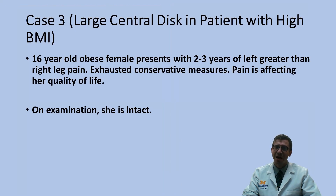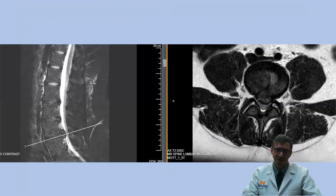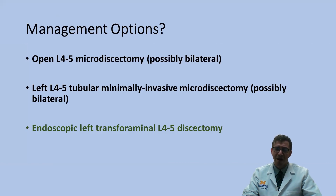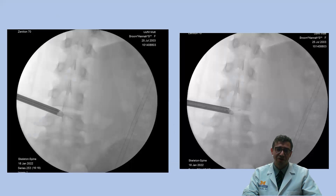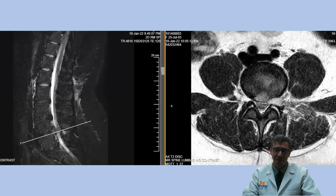A second example is a large central disc in a patient with high BMI, again showing how great these procedures are for obese patients. An obese female presented with clear lumbar radiculopathy, having exhausted conservative measures, with a large central disc herniation at L4-5. Multiple open and microscopic minimally invasive approaches were available, but with endoscopy we performed a transforaminal endoscopic discectomy. Intraoperative fluoroscopy shows how lateral we can get — all the way to the pedicle below, and at the level of the superior disc space to the medial pedicles. Post-op scan shows much greater improvement in the disc herniation and her symptoms resolved completely.